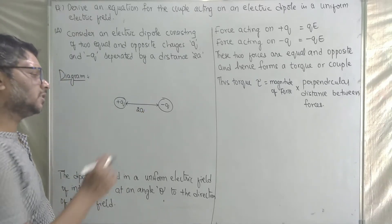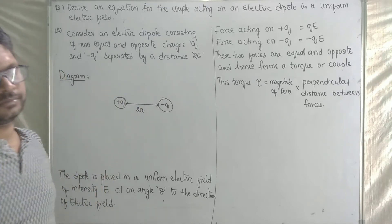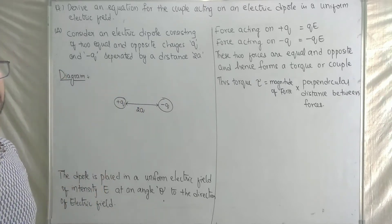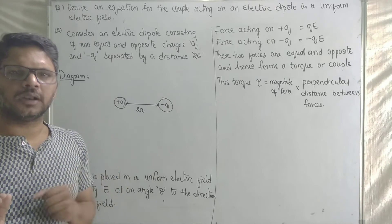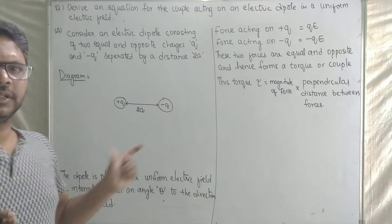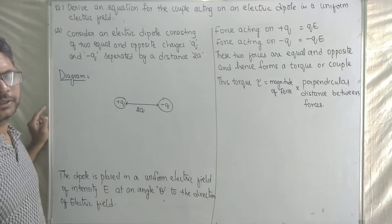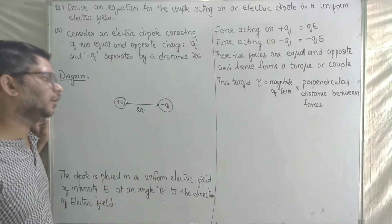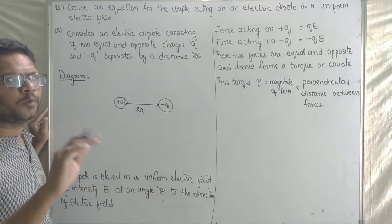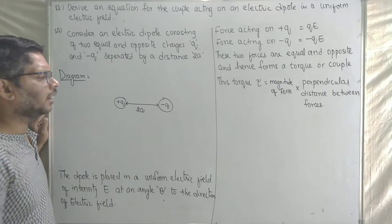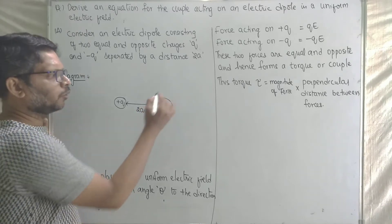The distance is denoted as 2a. From this we define the dipole moment. The dipole moment is called P.